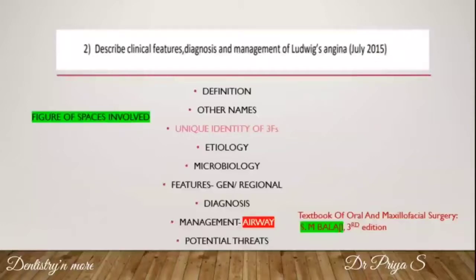There is a chance of airway compromise in Ludwig's angina, so you need to mention what airway maintenance techniques are used. Ludwig's angina is associated with a range of serious complications — such as septicemia, pericarditis, mediastinitis, and neurological complications — all of which must be enumerated. Include all these points in your answer to make it complete.